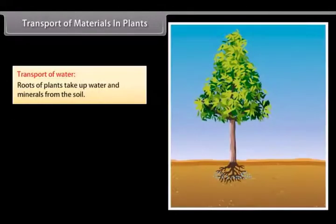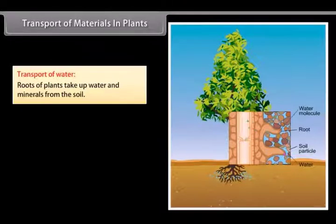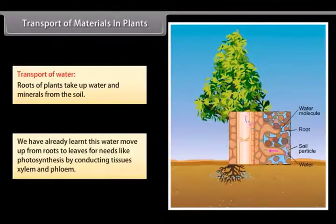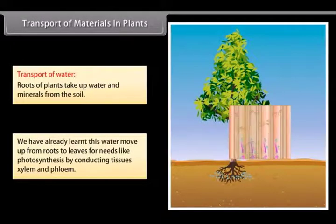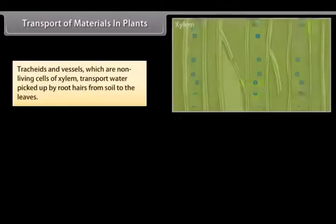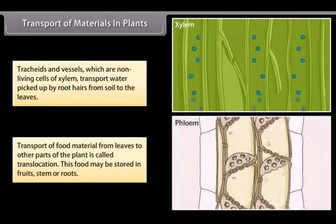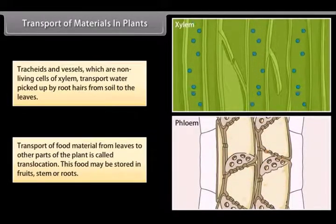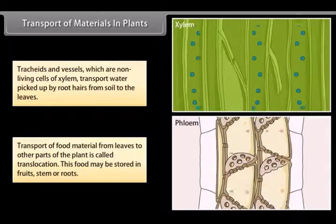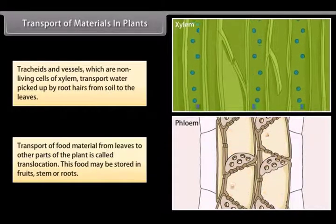Transport of materials in plants. Transport of water. Roots of plants take up water and minerals from the soil. We have already learnt this water moves up from roots to leaves for needs like photosynthesis by conducting tissues, xylem and phloem. Tracheids and vessels, which are non-living cells of xylem, transport water picked up by root hairs from soil to the leaves. Transport of food material from leaves to other parts of the plant is called translocation. This food may be stored in fruits, stem or roots.